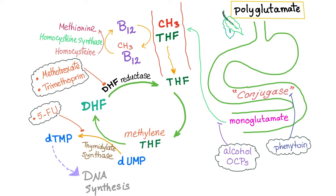That's why in B12 deficiency or folate deficiency, we have elevated homocysteine — because there is no folate to give the methyl to B12, to give the methyl to homocysteine, to convert it to methionine. So homocysteine levels are increased and methionine levels are decreased.